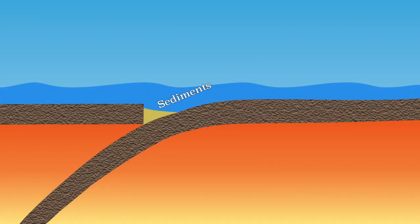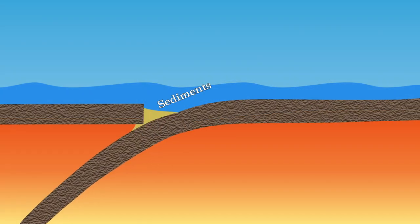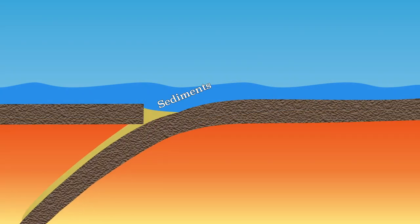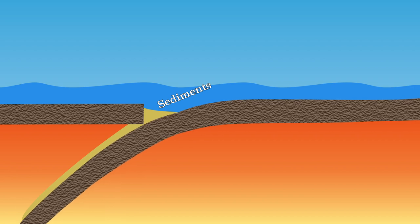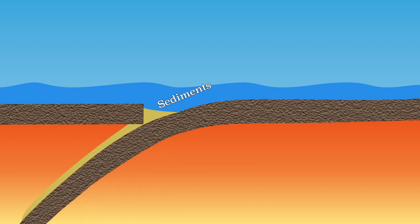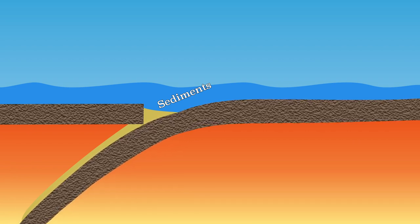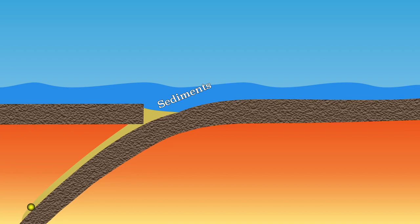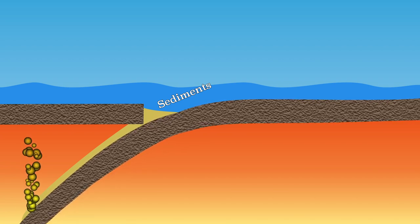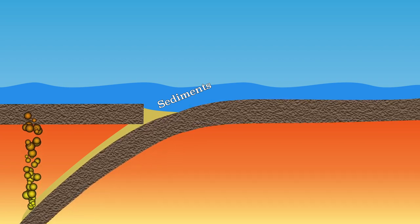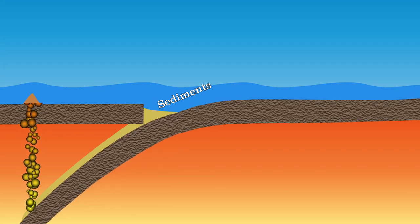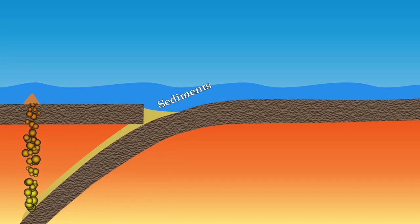The diving plate also carries a layer of sediment and some water towards the asthenosphere. Once the diving plate arrives in the asthenosphere, it will melt together with the sediment. The molten mass is relatively light and rises to the crust, where the formed magma wants to burst out, which forms a volcano.